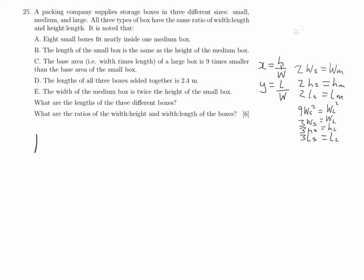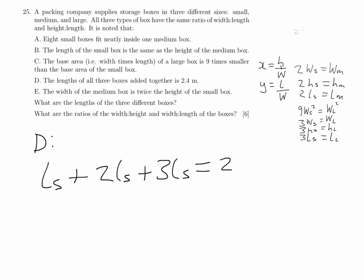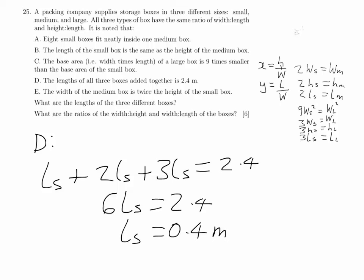Now I'm going to find the lengths of the different boxes. Statement D tells us that the length of the small box plus the length of the medium box plus the length of the large box equals 2.4 metres. Using our derived facts — the medium box is twice the small, and the large box is three times the small — we get an equation with one variable. Solving it, the length of the small box is 0.4 metres.